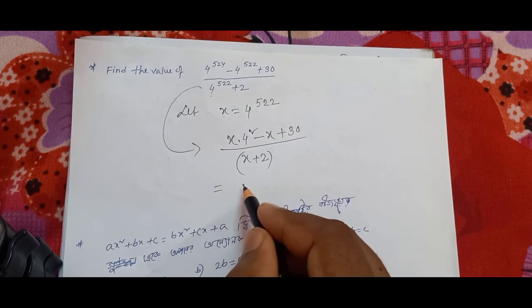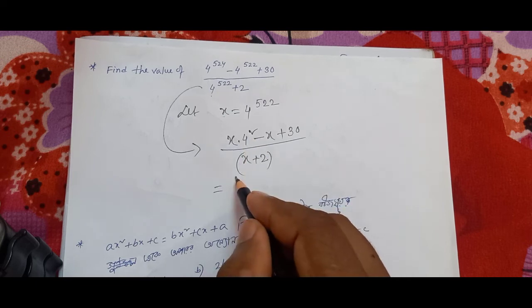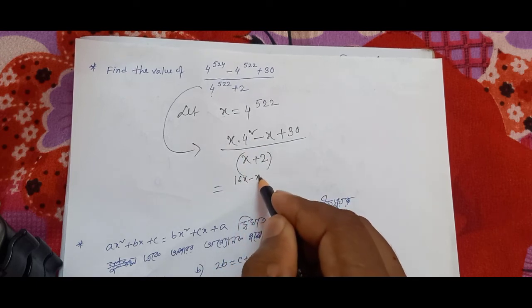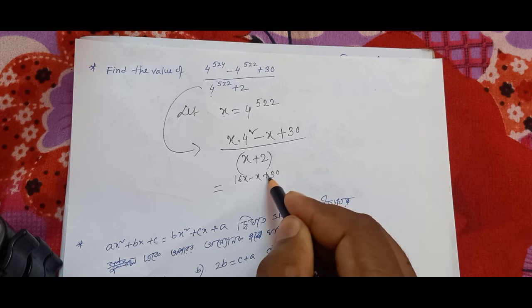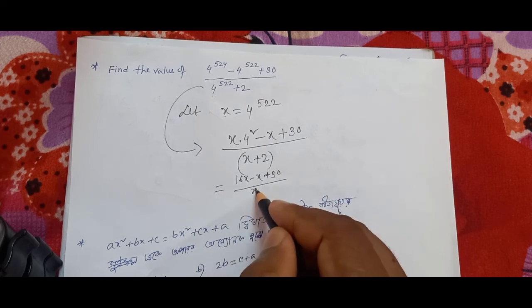On simplifying, 4 squared is 16, so we have 16x minus x plus 30 by x plus 2.